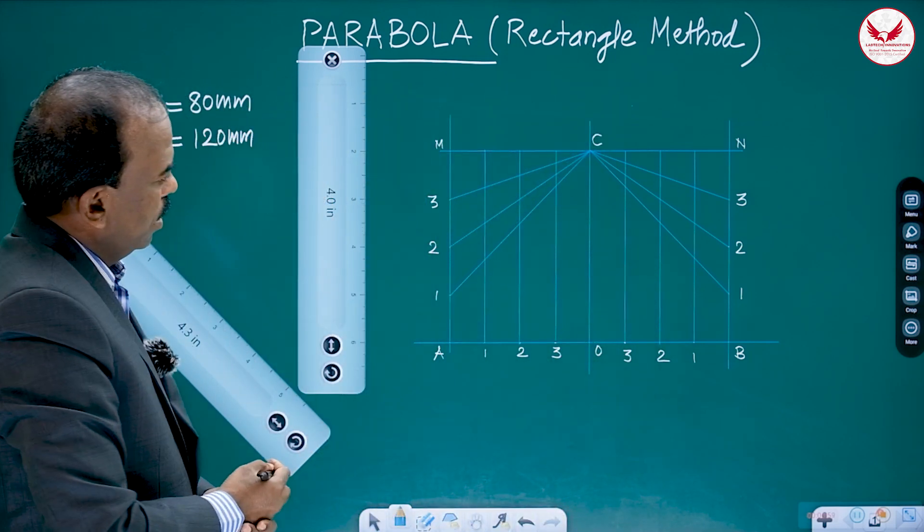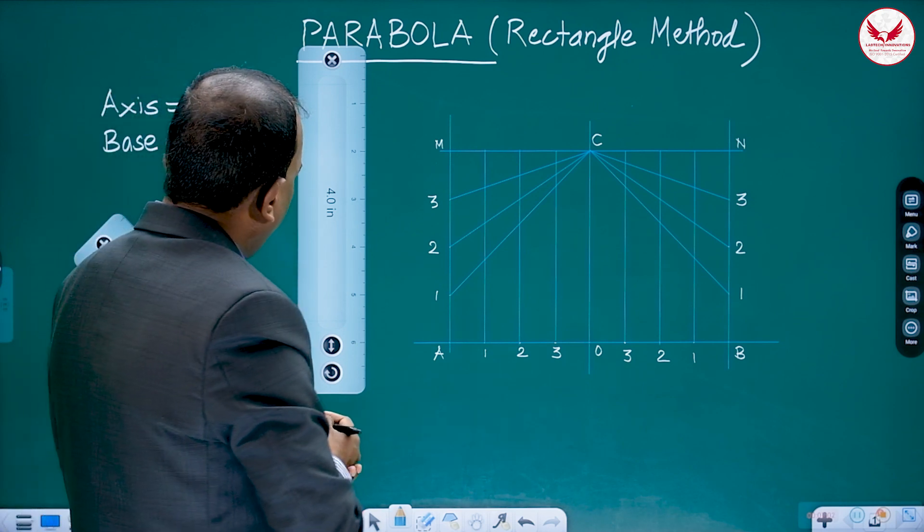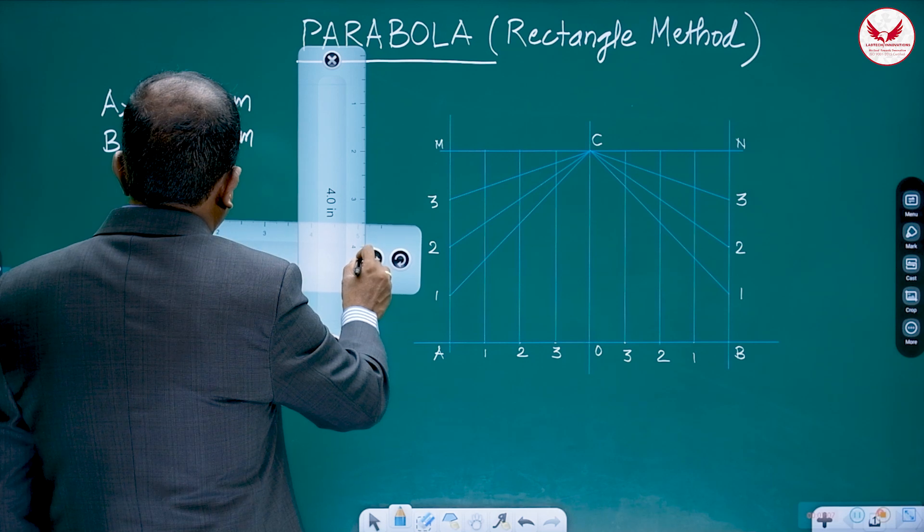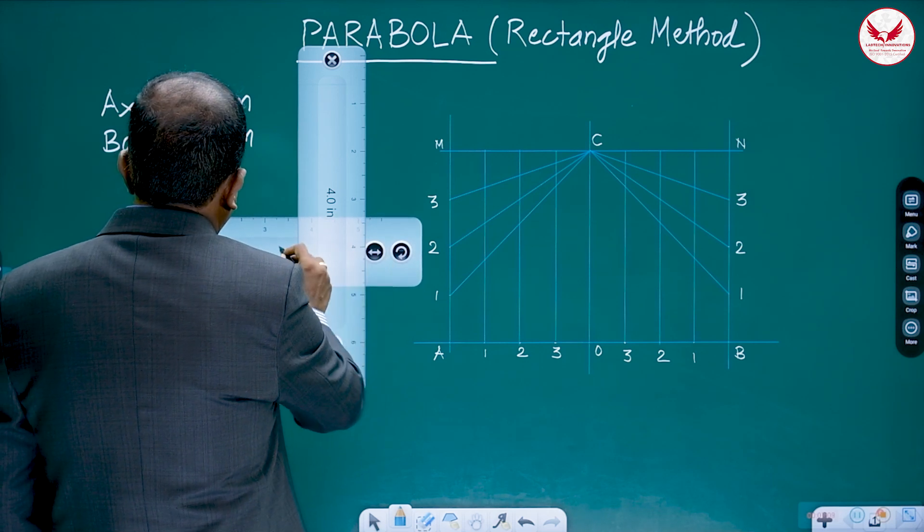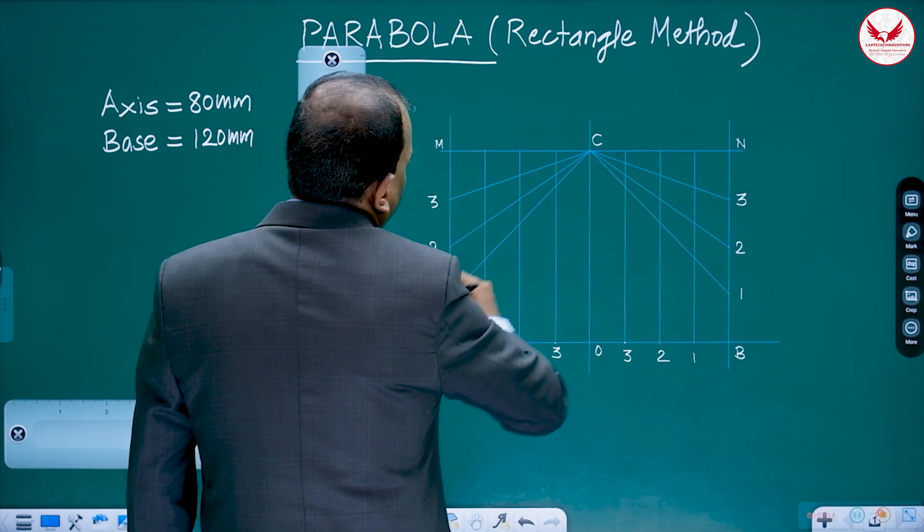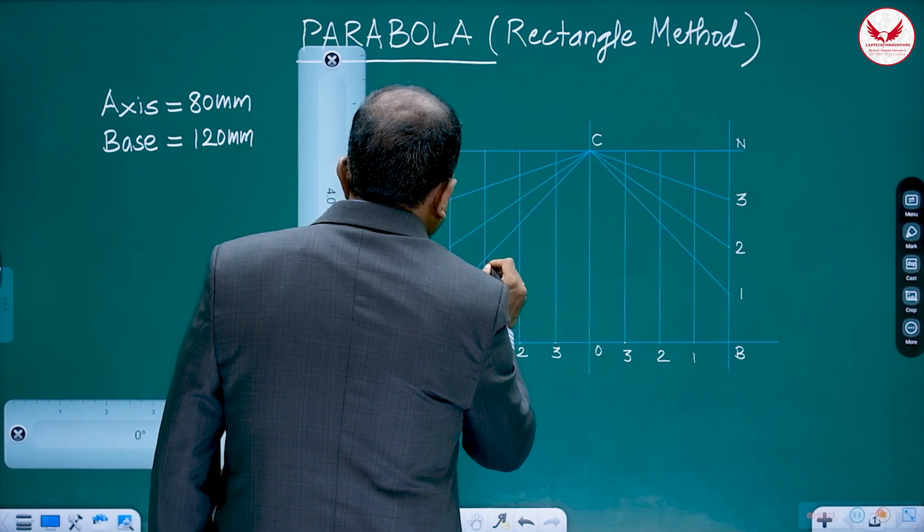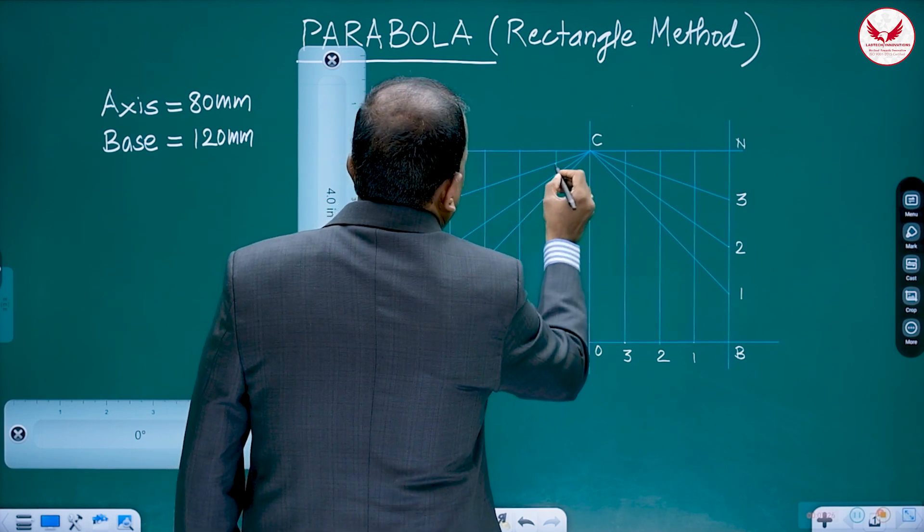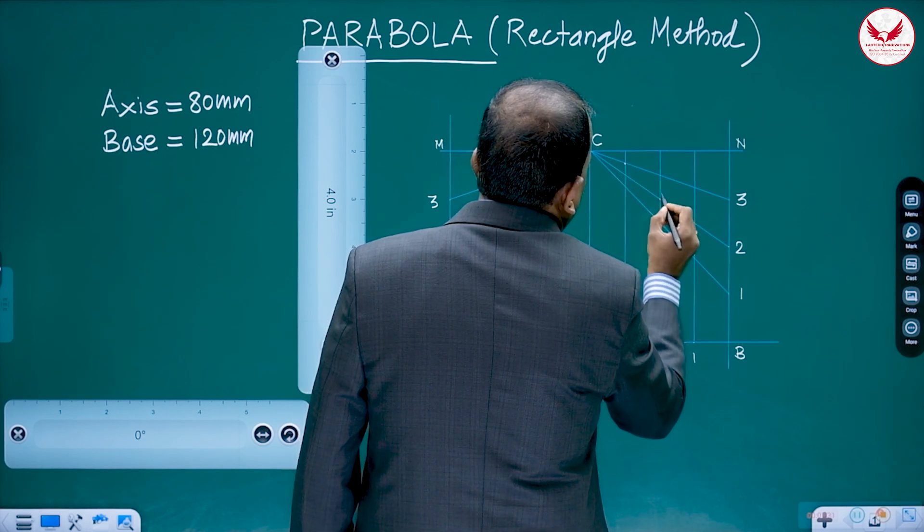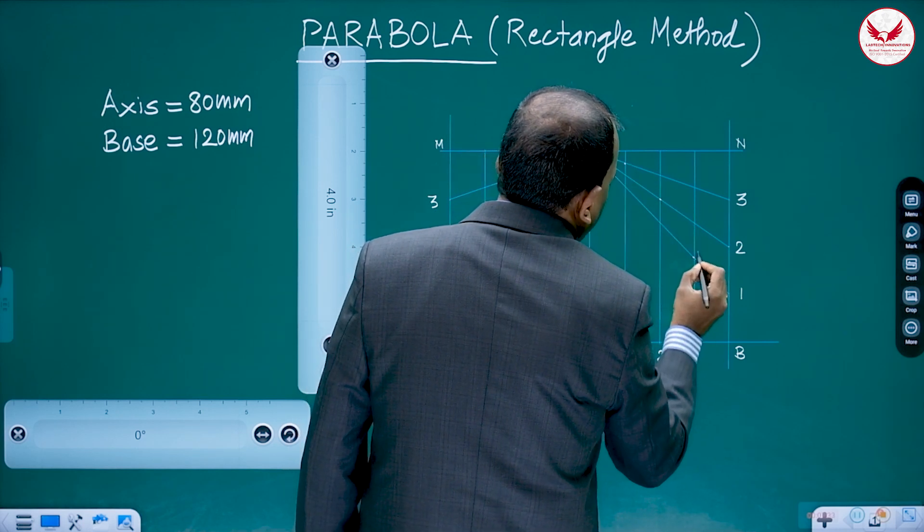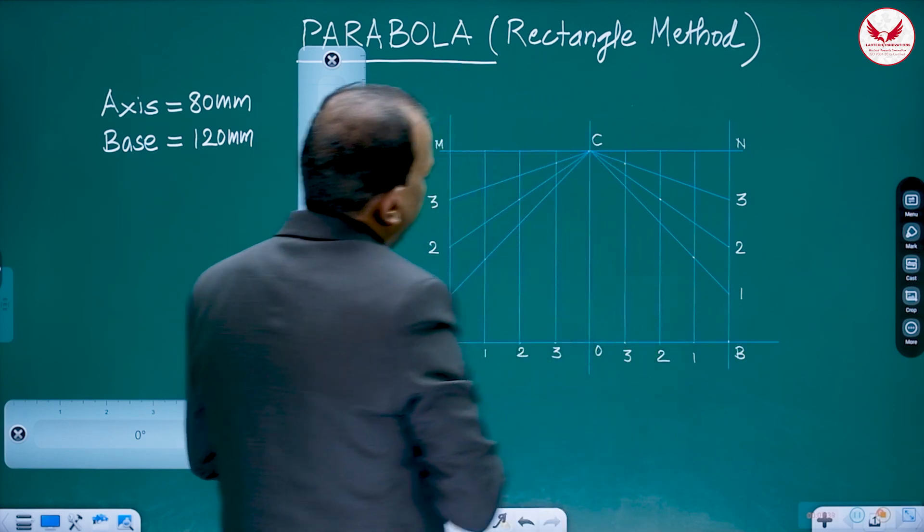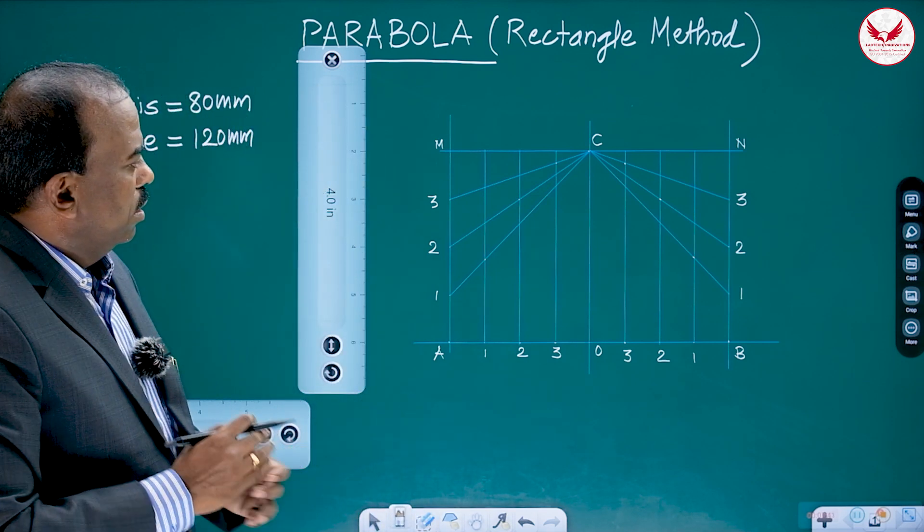Now, we'll get the points on the parabola. And how we'll get these points on the parabola? One vertical line, one slant line. Their intersection is P1. Then, it's P2. It's P3. Again, it's P3. It's P2. It's P1. And it's B, A, and C. Already, these points are on the parabola.